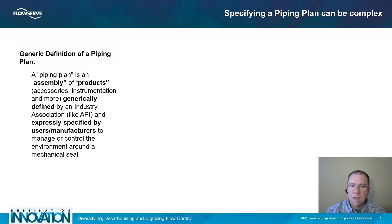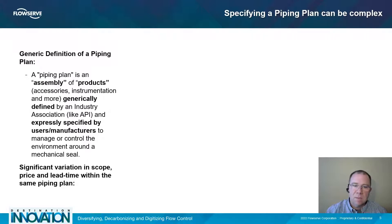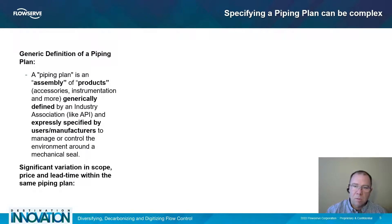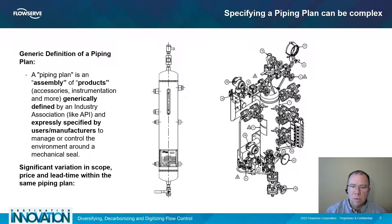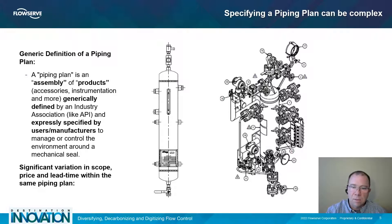It's up to the end user or the manufacturer of the piping plan to expressly specify all the details, components, and construction of that piping plan. This means you can have wide variation in scope, price, and lead time all within the same piping plan. For example, for a Plan 53A, the left example is a common general industry piping plan that can typically cost around two to three thousand dollars with a lead time of less than one week. On the right, you can see a Plan 53A commonly used in the oil and gas industry on large projects.